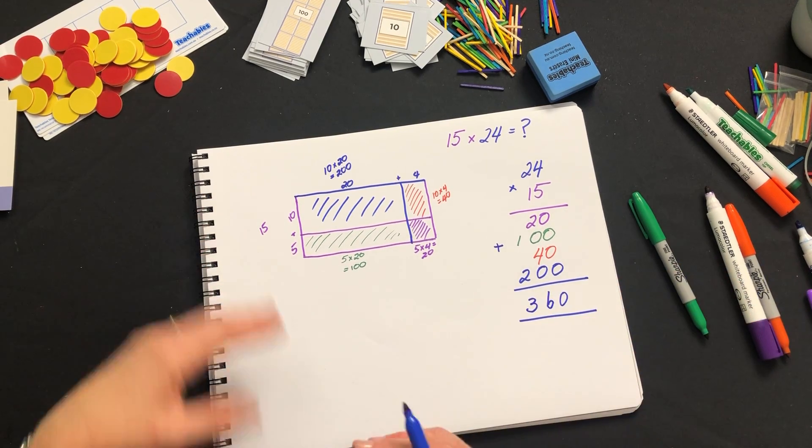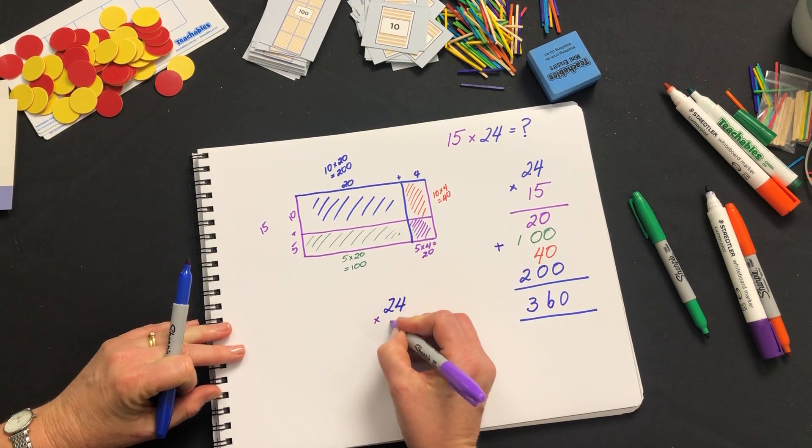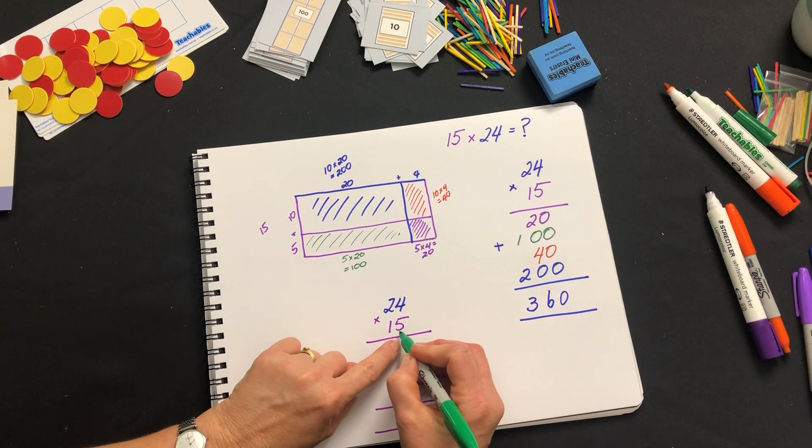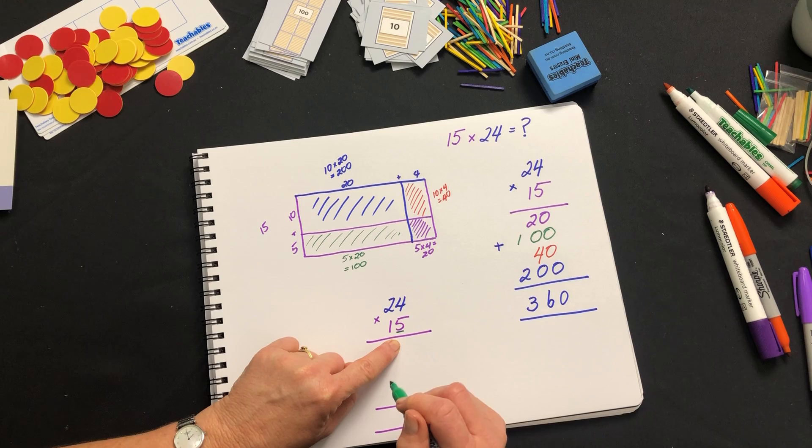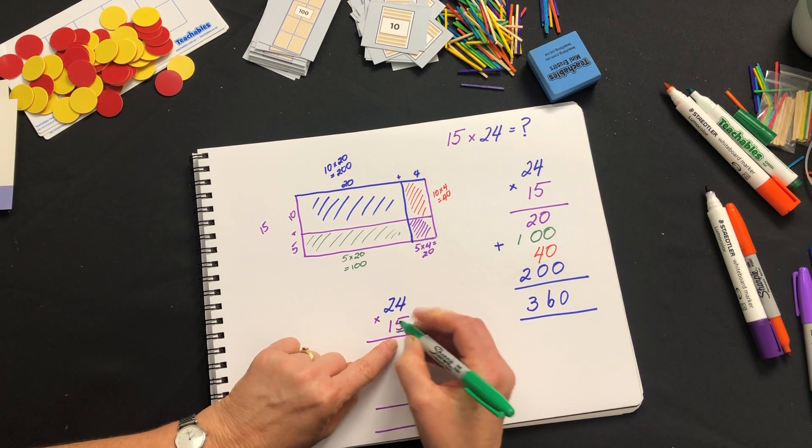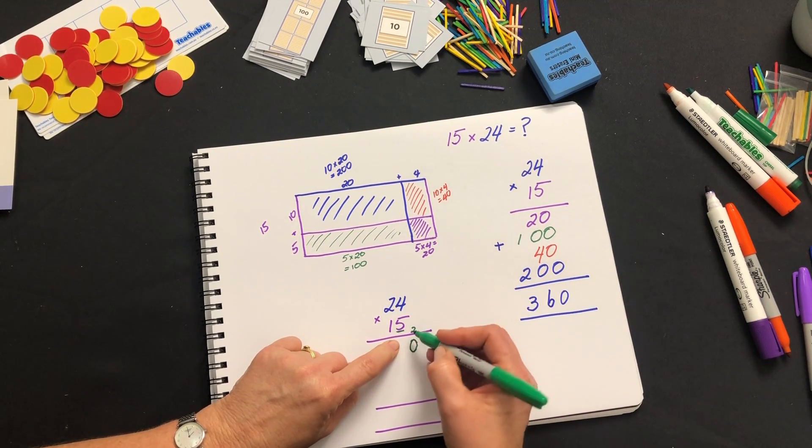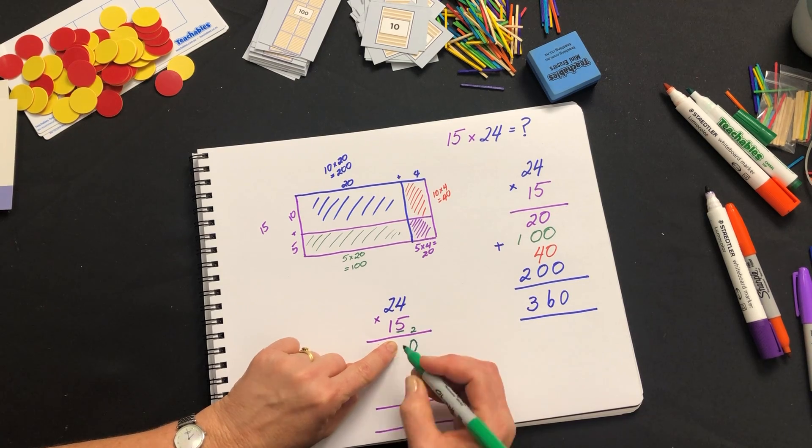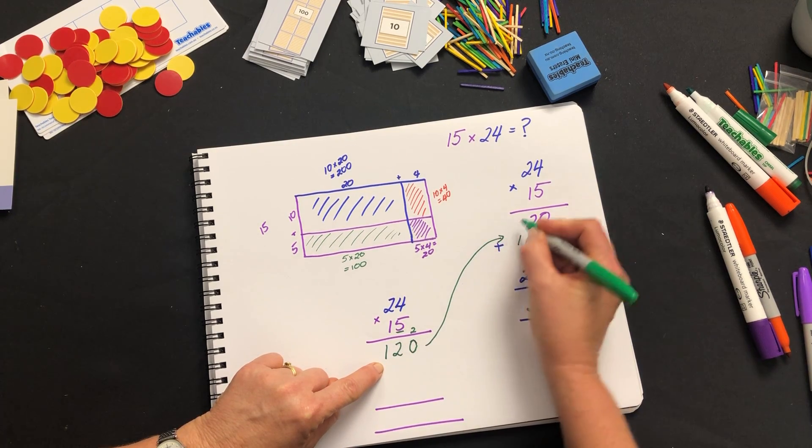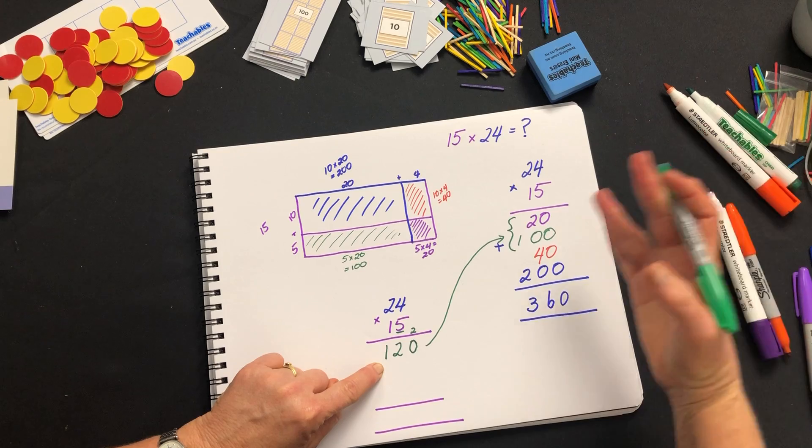Let me compare that to perhaps a more traditional way that you may have been shown this algorithm. Okay so the first step would be to multiply by the 5. 5 times 4 is 20 which we had here but we're told to put down the zero and carry the 2. 5 times 20 was 100 plus the 2 which is in fact 20 becomes 120. We've just done in one step those two steps and that can cause a lot of confusion for students. We're multiplying and adding as we go along.